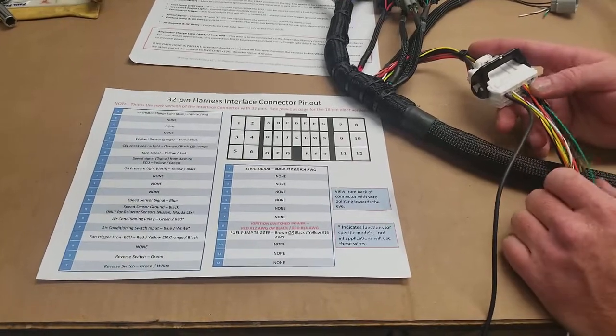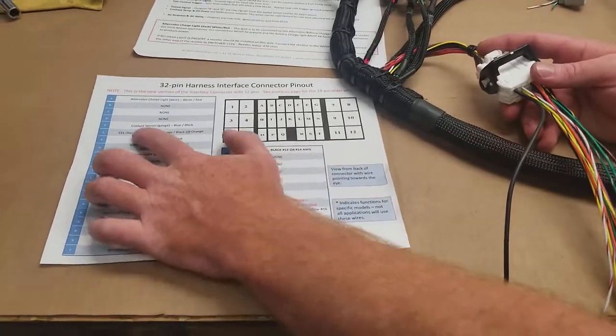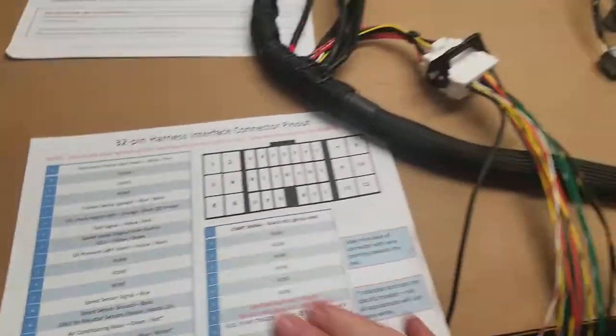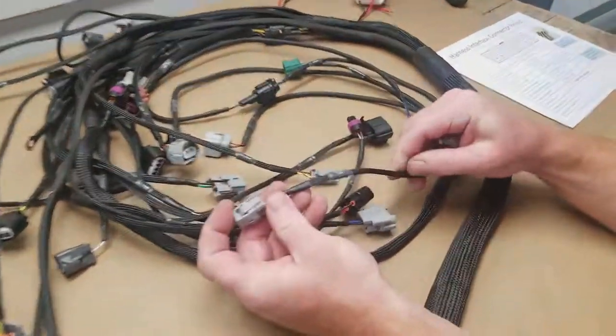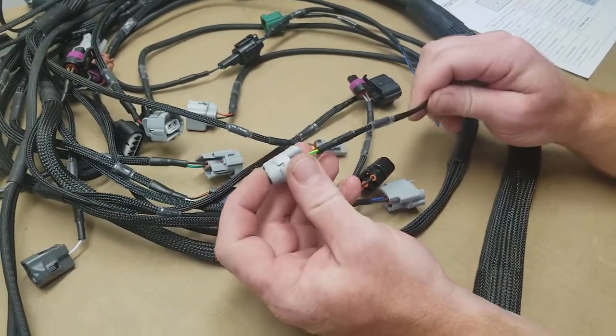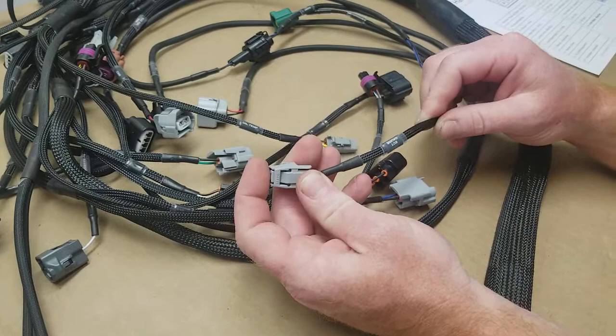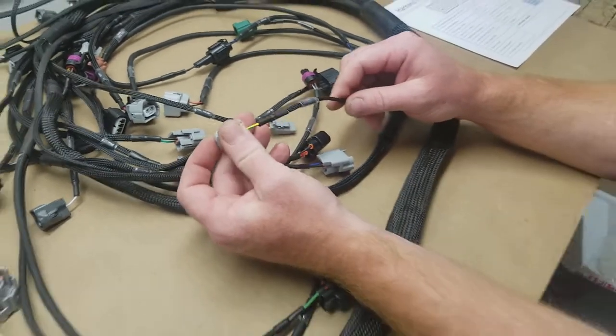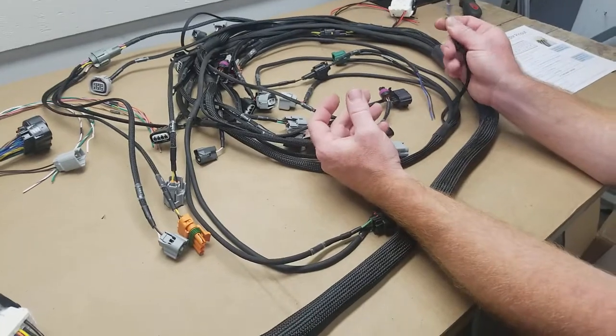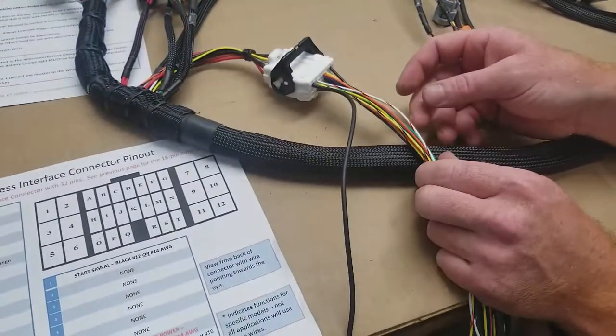Now we can look at some of the other functions. We've got items like our coolant sensor and our oil pressure. These are going to be single-wire connectors that you'll find in the engine bay area. This will allow you to run an aftermarket gauge or potentially your factory gauge. You're going to run this directly to the sending unit on the motor, and then it's going to hook into the back of your gauge from the interface.